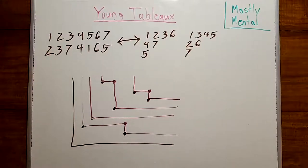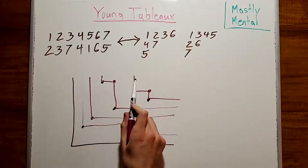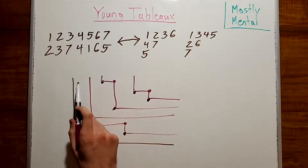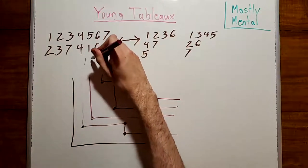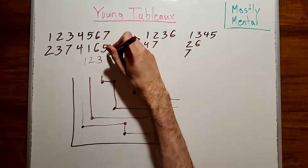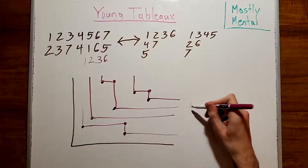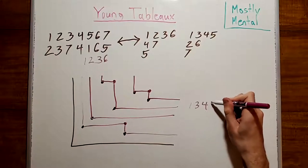And then we'll write down the coordinates where these lines extend off the page. So, here we have 1, 2, 3, 6, and here we have 1, 3, 4, 5.